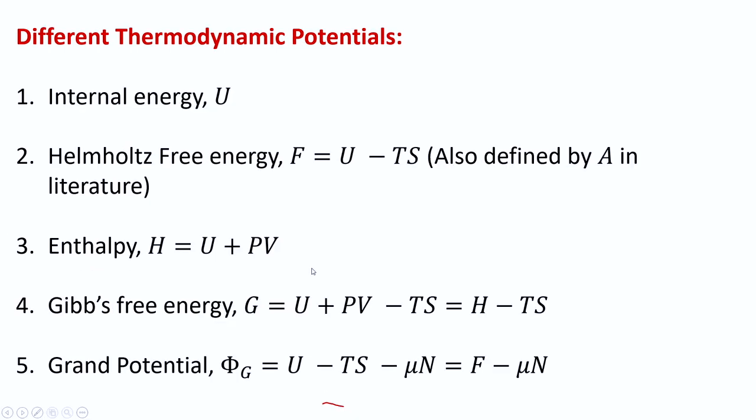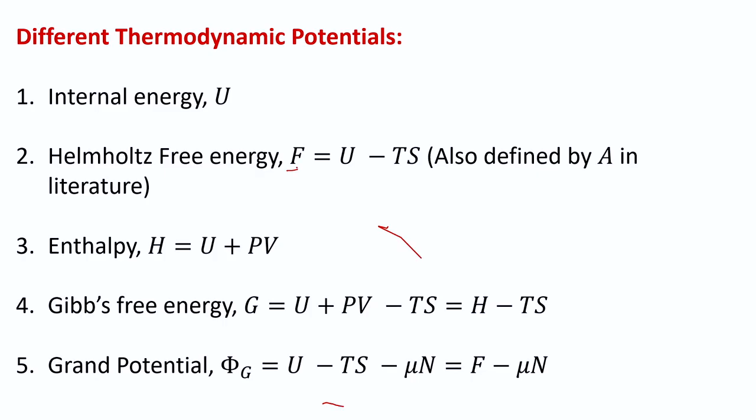Let us go to some of the thermodynamic potentials used in both thermodynamics and statistical mechanics. Internal energy, for a gas, is mostly the kinetic energy of the molecules. We talk about Helmholtz free energy, often written as F (also as A in literature). F equals U minus TS, where U is the internal energy, T is the absolute temperature, and S is the entropy.